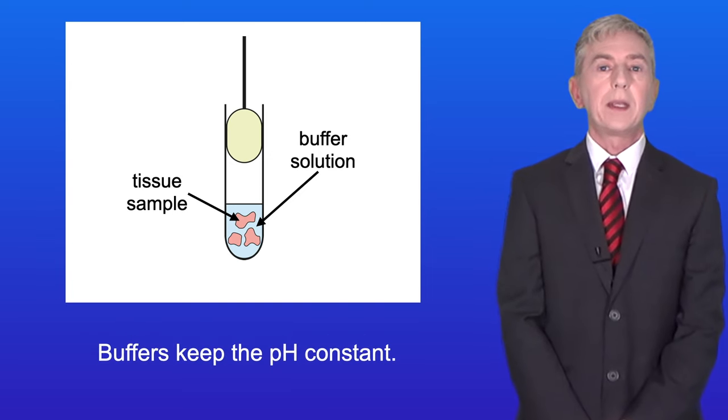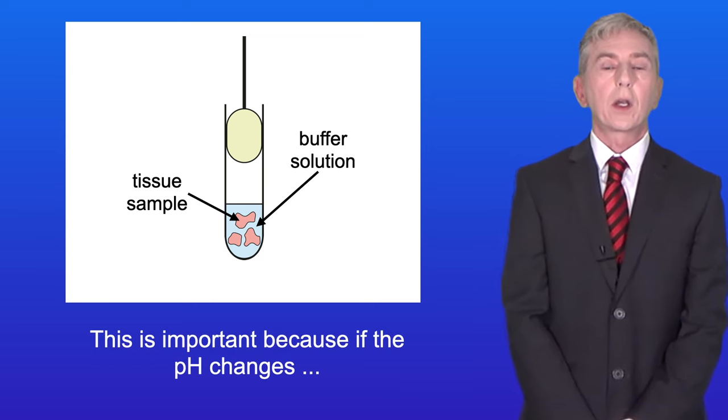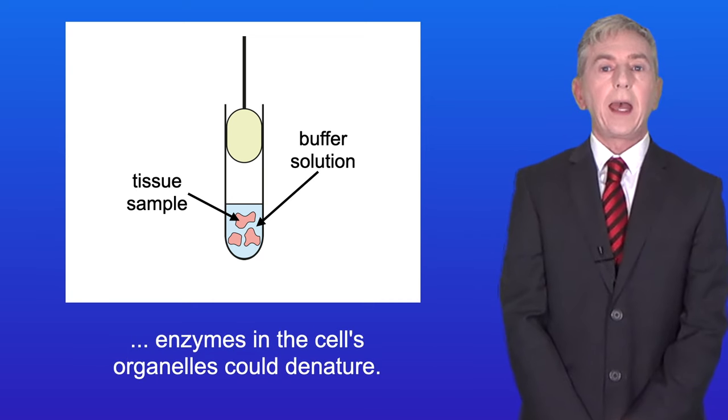Buffers keep the pH constant. Now this is important because if the pH changes enzymes in the cell's organelles could denature.